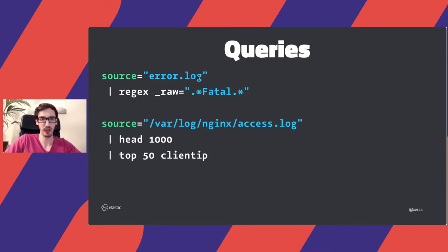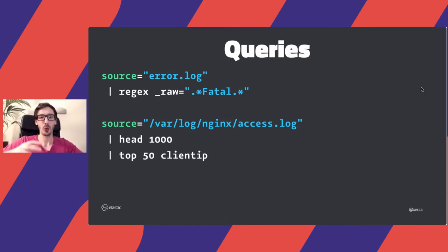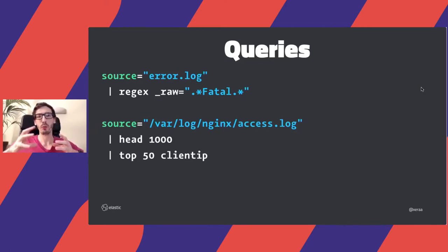It was a big step forward for log management, and it built on relatively similar query concepts to what we had before. For example, you could say the source is a specific error log file and run a regex query searching for everything fatal, or take Nginx access logs, take the first thousand entries, and get the top 50 client IPs. It still looked quite similar to what we were doing with grep — piping one command into the next — so it was a natural evolution from a single log file to a more centralized approach.